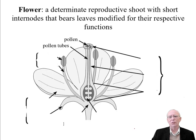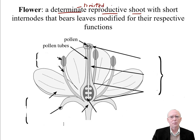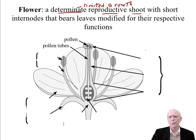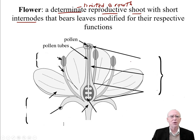Here's our diagram of a flower. A flower is a determinate reproductive shoot. Determinate means it is of limited growth — it doesn't continue to grow, grows for a short period of time and stops. Obviously flowers grow for a very short period of time. A reproductive shoot means it's going to be involved in the reproduction of the plant. It has short internodes — we never really even see the internodes; they're so short in a flower.